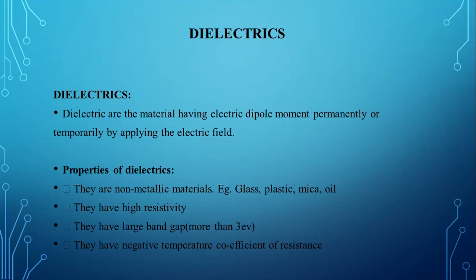But all insulators are not dielectrics. The main function of a dielectric is to store electric charges when a potential difference is applied across its ends. But the main function of an insulator is to restrict the flow of current when a potential difference is applied across its ends.